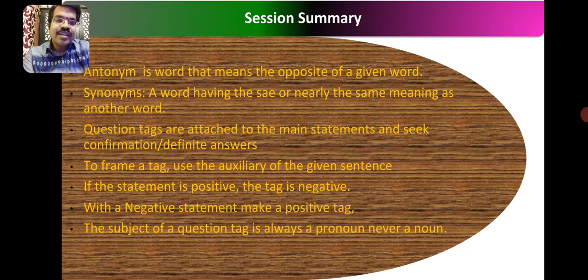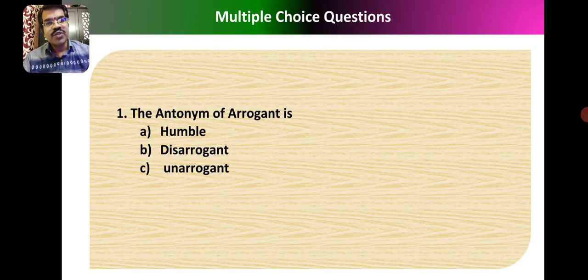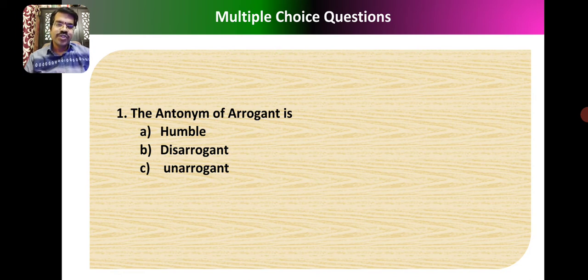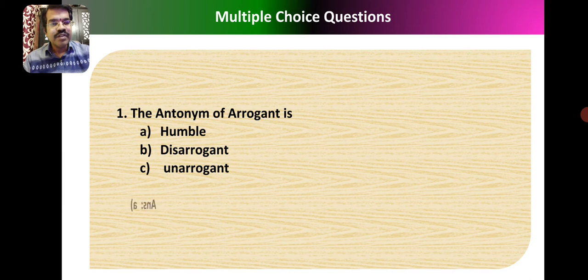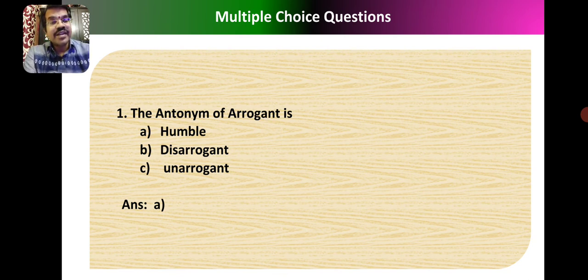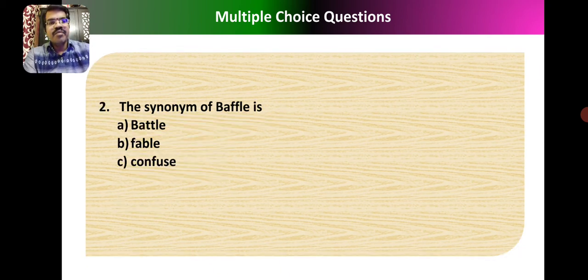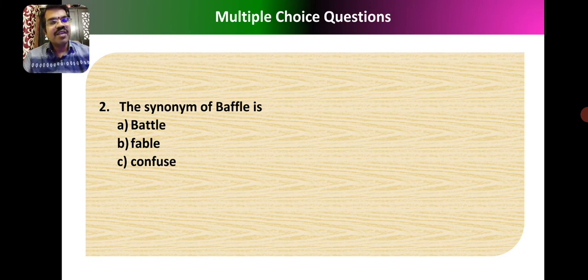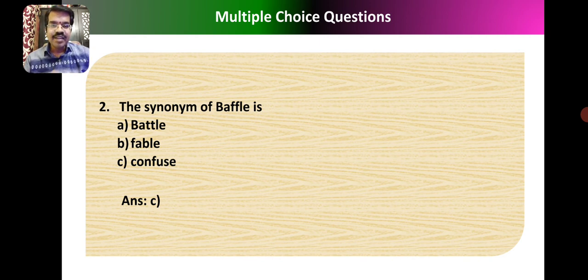The subject of a question tag is always a pronoun and never a noun. Now, a few questions to gauge today's learning. Question 1: The antonym of 'arrogant' — the right answer is 'humble.' Question 2: The synonym of 'baffle' — synonyms have similar meanings, so the answer is 'confuse.' Baffle and confuse have more or less similar meanings.